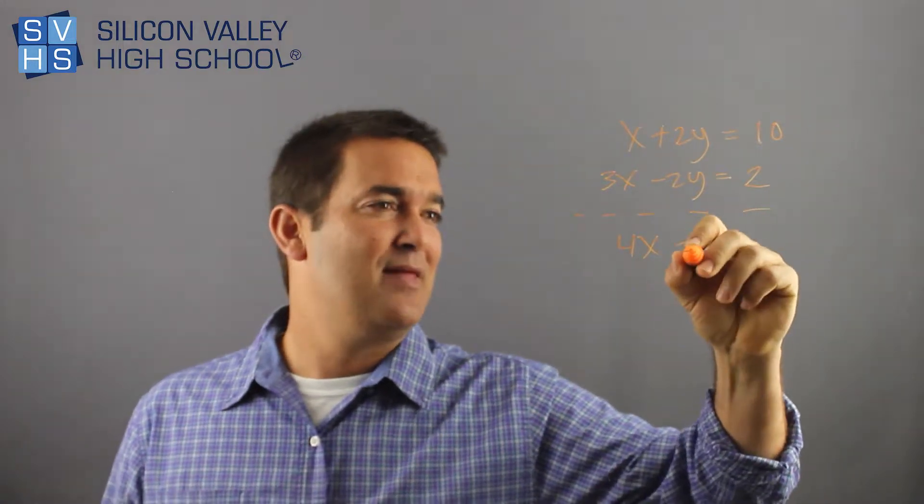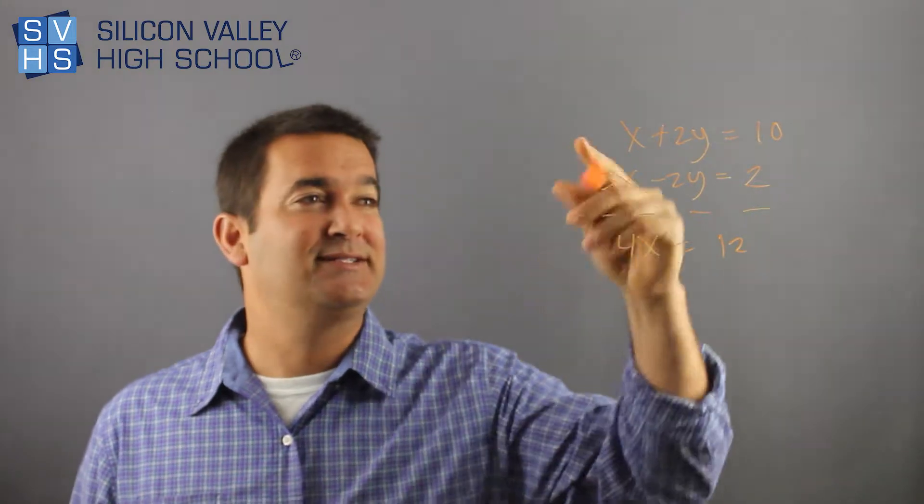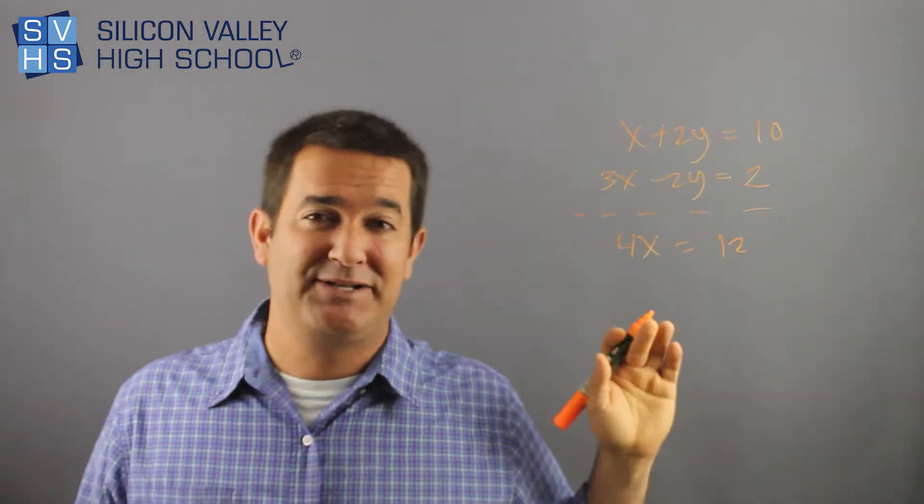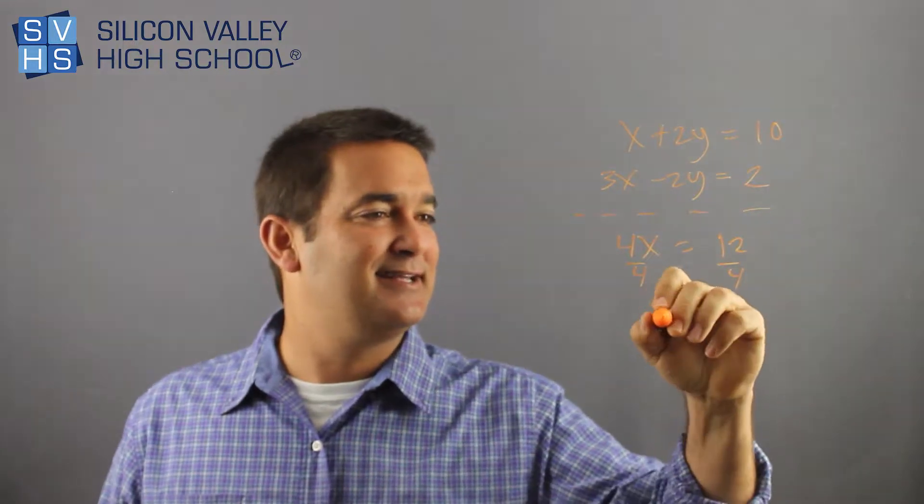And then this equals 12, right? And so now, by doing this little secret addition method, y magically disappeared. I can solve for x, like this, x equals 3.